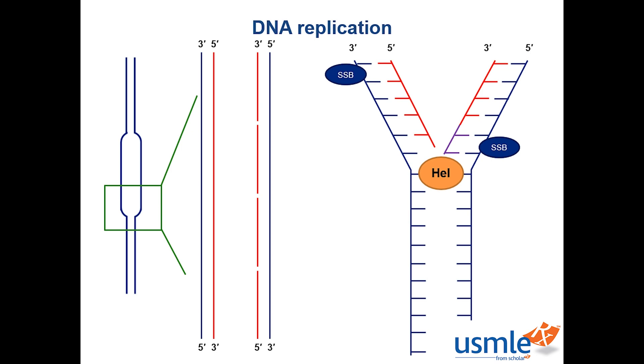So as DNA polymerase 3 is making each new strand, it proofreads its work, and if it realizes it made a mistake by adding the wrong nucleotide, it can remove it by using its 3' to 5' exonuclease activity. This is of course the opposite direction as DNA synthesis, since it's going backwards to remove any mistakes.